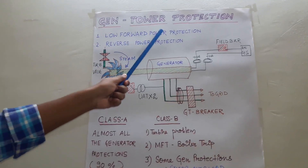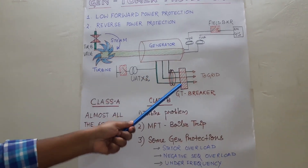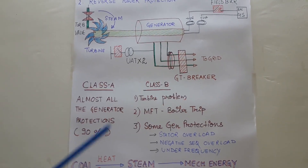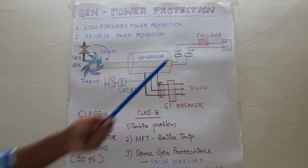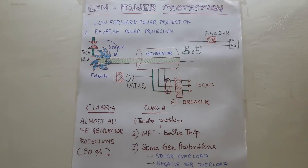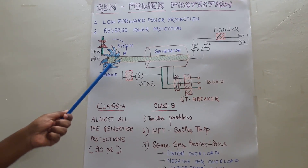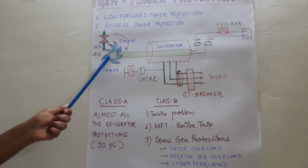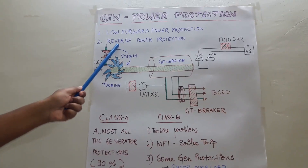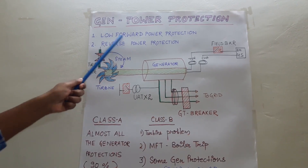Suppose this low forward power protection does not operate. The steam valve is in closed condition — the prime mover has been lost — but the GT breaker is still closed, so the generator will draw active energy from the grid and behave like a motor. If excitation is on, the generator will behave like a synchronous motor; if excitation is off, it will behave like an induction motor. The turbine will then rotate at 3000 RPM, which is not desirable because there is no steam, and this may damage the turbine blades. For that reason, the reverse power protection is configured in the relay. This is a very rare condition because before reverse power protection, the low forward power protection will typically operate.